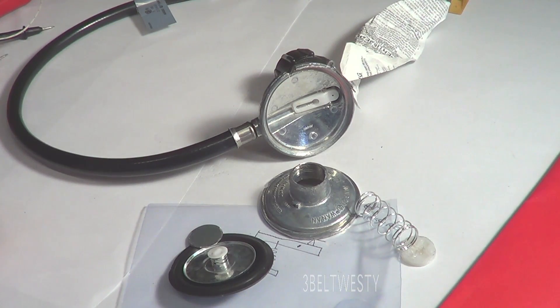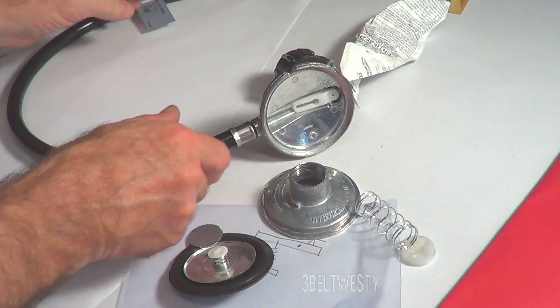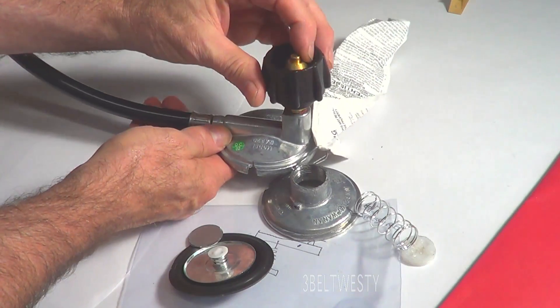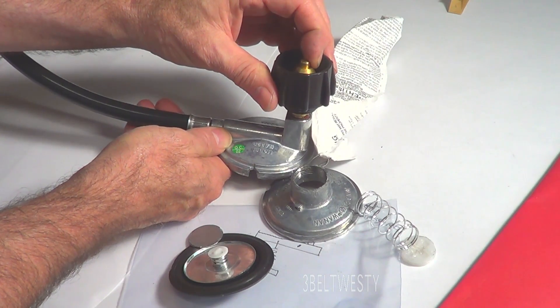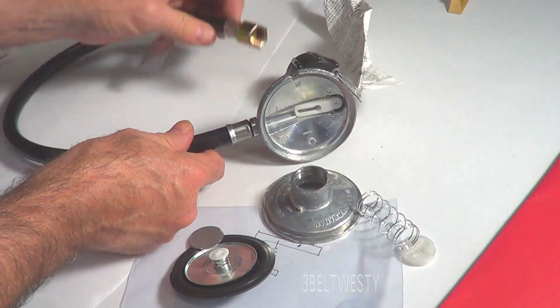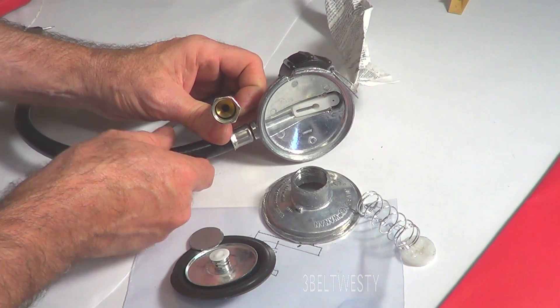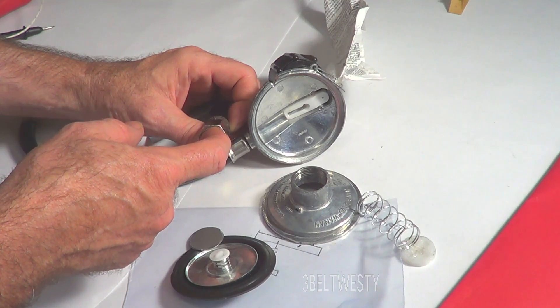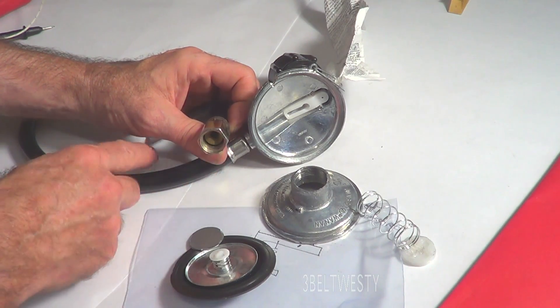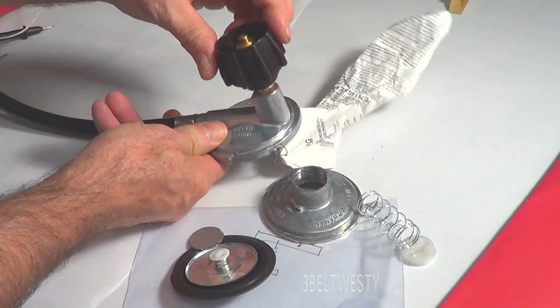Okay, here's an LP barbecue regulator. This end connects up to the propane tank, this end hooks up to your grill. This drops it down between 10 to 13 inches of water pressure. The way this works is...